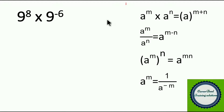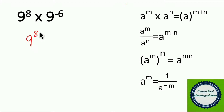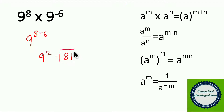9^8 × 9^(−6) fits the first fundamental rule: a^m × a^n. Here a = 9, so we write 9^(8 + (−6)) = 9^2, which is nothing but 81. So the answer for this question is 81. This is really simple!